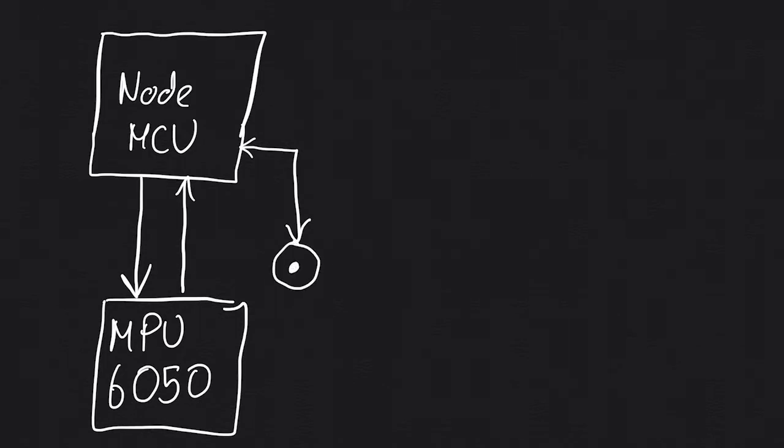Once the MPU6050 transmits the sensor data, that is the accelerometer and gyroscope data, to the NodeMCU, the NodeMCU transmits it to a Wi-Fi network via a web socket connection where a computer receives it.